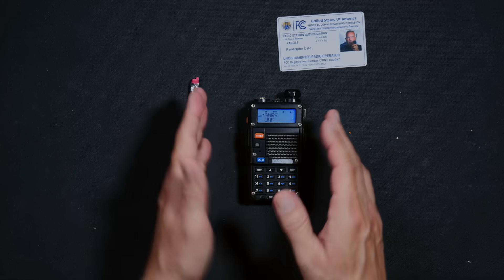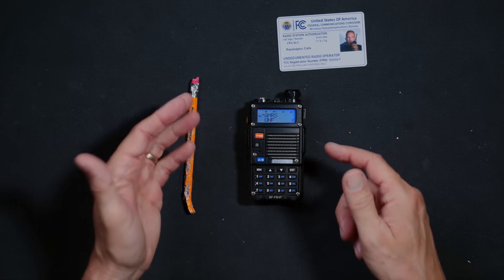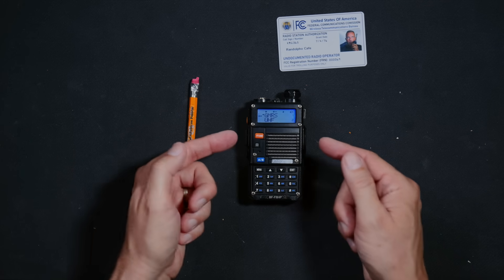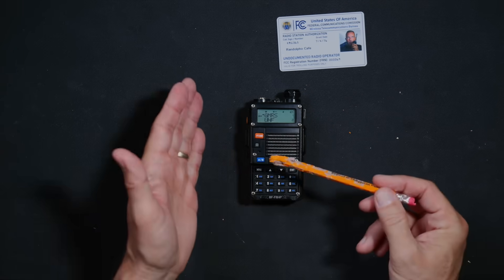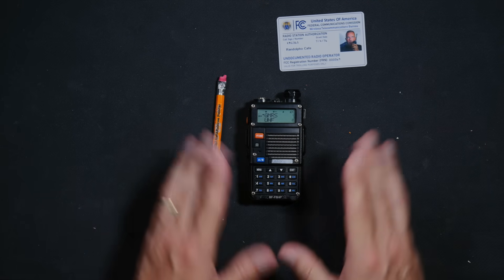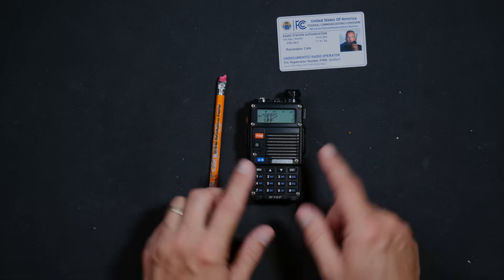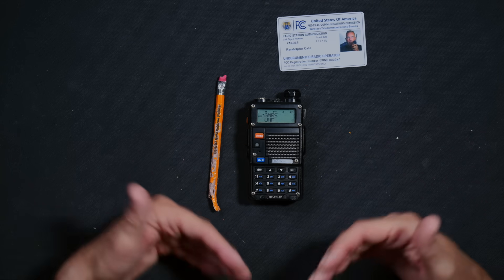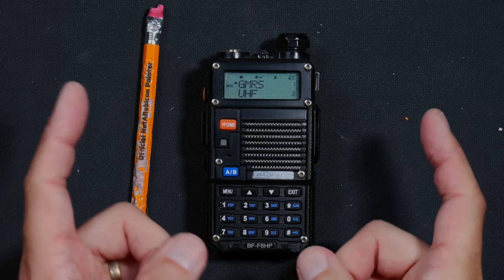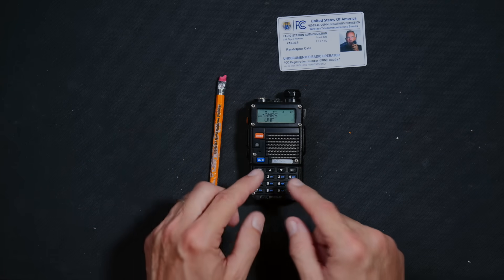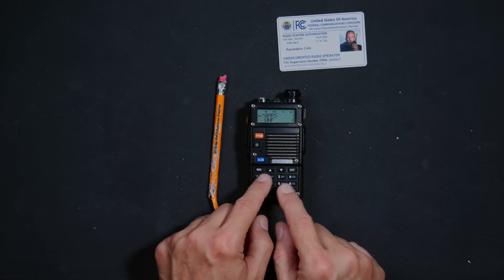Once you know what frequency that other radio is using, you are ready to enter that frequency into your Baofeng UV-5R or similar radio. And this is the easy part. To begin, you will need to make sure that the radio is in what us radio experts refer to as VFO mode. This is the mode that allows you to type frequencies directly in on the radio.